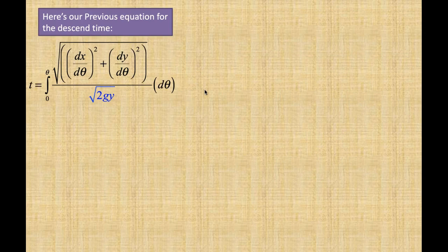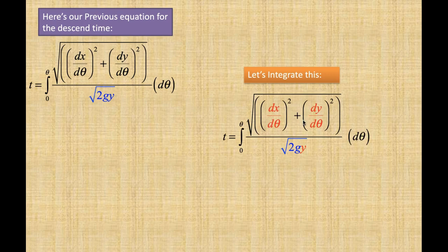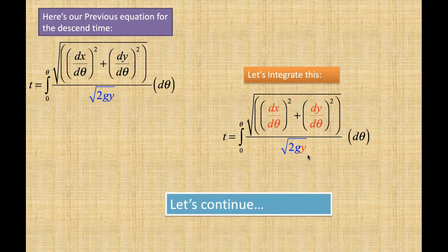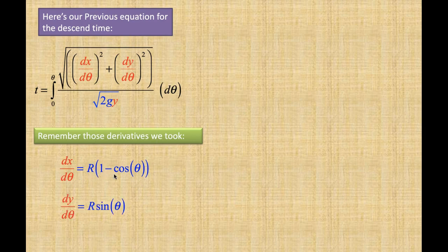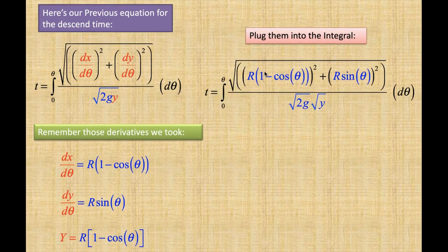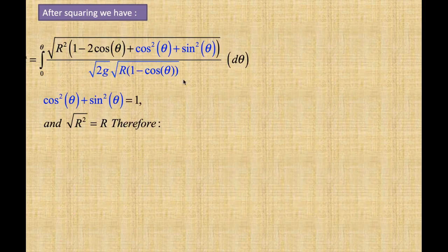Here's our previous equation for the descent time. We substitute the derivatives: dx over d-theta equals r times one minus cosine theta, and dy over d-theta equals r·sine theta, along with y equals r times one minus cosine theta. We separate the square roots, plug in our values, perform the squaring operation, and use the identity cosine squared plus sine squared equals one. The square root of r squared equals r, which we factor out.